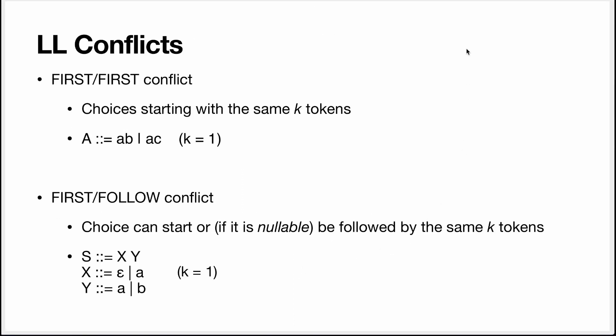If you feed a grammar to an LL parsing tool: if the grammar is LL, the tool will be very happy and generate a parser for you. However, if the grammar is not LL, the tool will tell you why. One type of conflict it may report is a first-first conflict, which happens when you have a choice where alternatives start with the same K tokens. For K equal 1, if both choice alternatives start with A, that causes a first-first conflict.